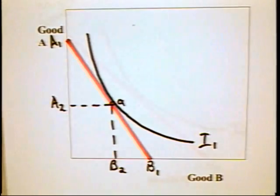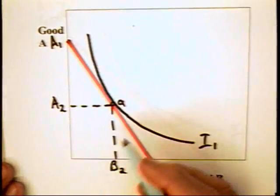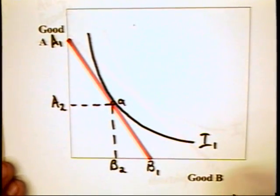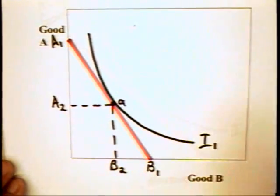We can deal with the subsidy in terms of this now familiar graph. In this graph we have good A on the vertical axis, good B on the horizontal axis, and we have the individual at an equilibrium combination of A.